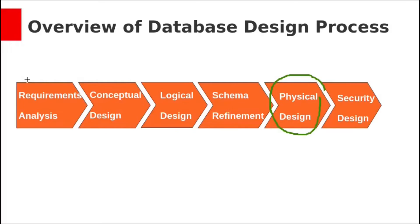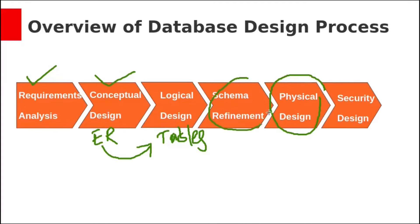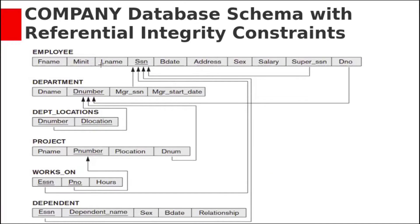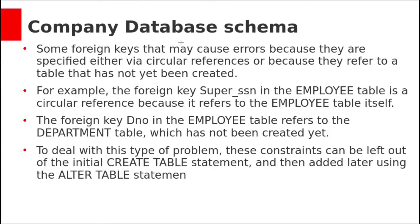We have seen requirements analysis, then conceptual design. We designed this using the ER model, and then we also designed the logical design by converting the ER diagrams into relational model tables. We will see schema refinement later. Let's see this physical design with Oracle. In this physical design, we will use the tables which are designed in the logical database schema of the company with referential integrity constraints. We already know how to create tables — we have seen that while we discussed DDL commands.